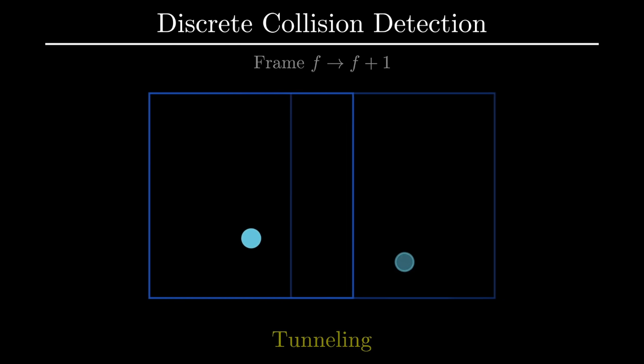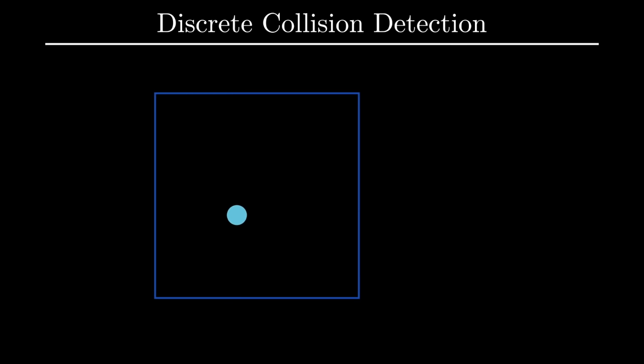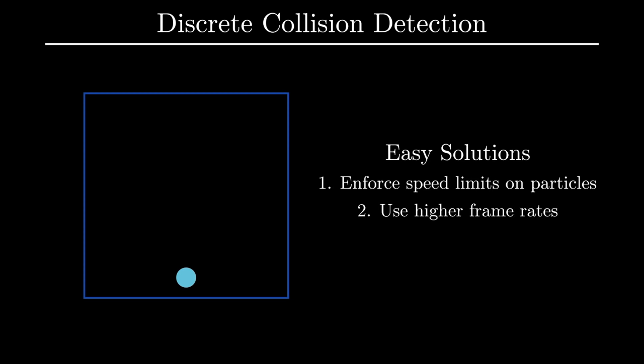Let me show you an example of tunneling — yeah, it can be pretty ugly. There are two easy solutions to tunneling and one that is substantially more complex. The first easy solution involves making sure particles don't move too fast. Discrete collision detection does have some randomness involved; when particles move slowly, we are more likely to detect collisions at an appropriate time. Another solution is a variation of the same idea: instead of slowing down particles, just take more frames. Both solutions work, but they are not ideal and definitely do not work in all cases.